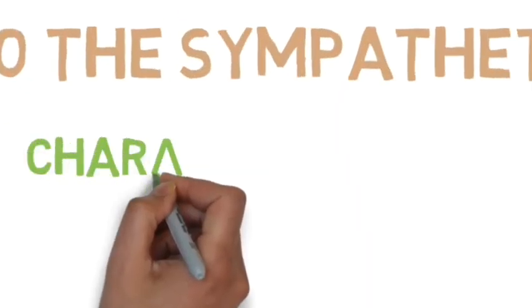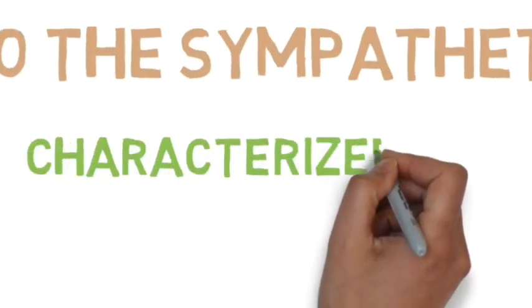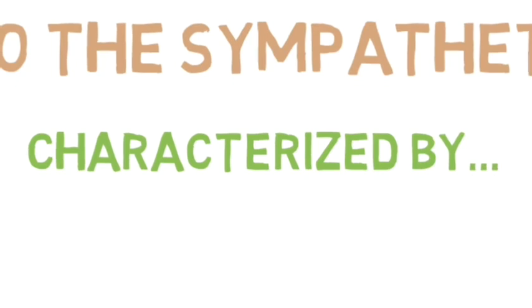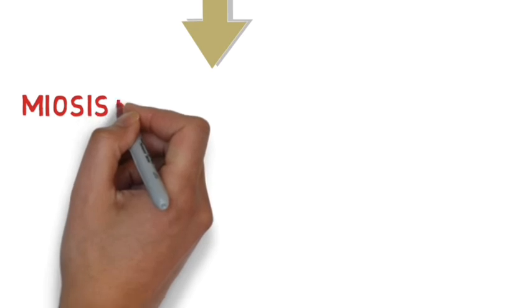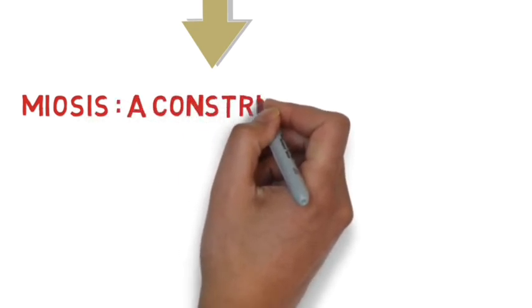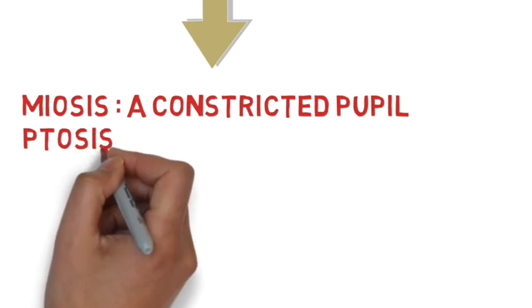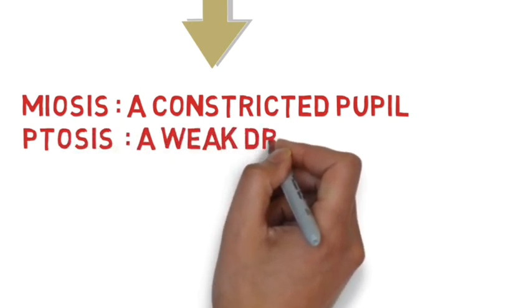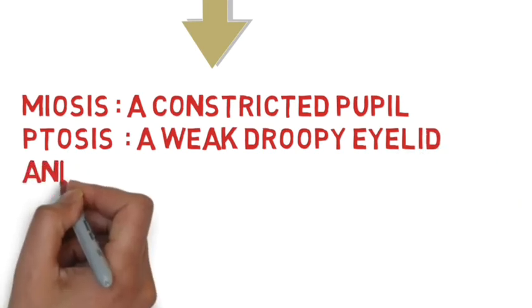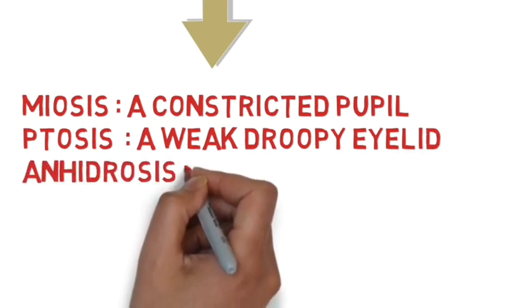Miosis, which means a constricted pupil; ptosis, a weak droopy eyelid; anhydrosis, reduction in sweating, with or without enophthalmos, which is sunken eyeball. Enophthalmos may or may not be present in characteristic Horner's syndrome.